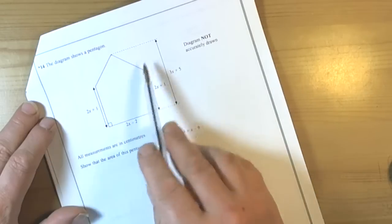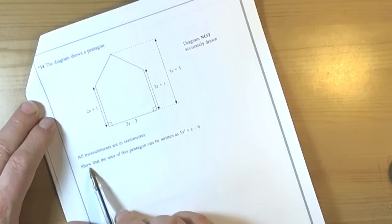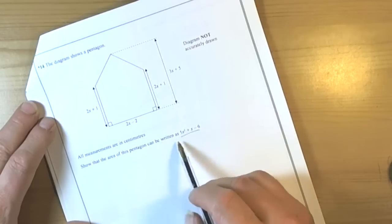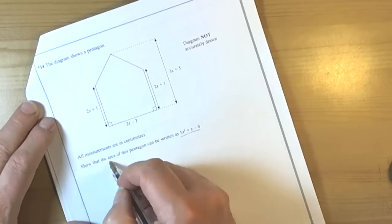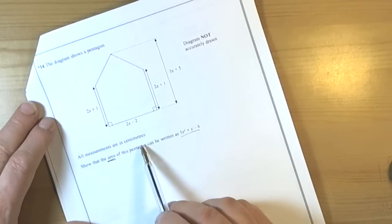Start question which means we're going to have to do lots of workings out and we're asked to show that the area of the pentagon can be written as this. So we're having to produce a quadratic and it's talking about the area, so there's the key idea on these show questions.